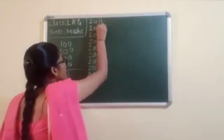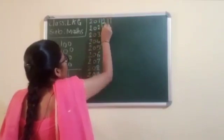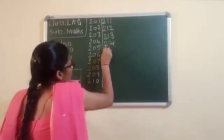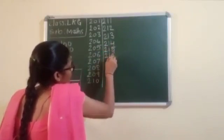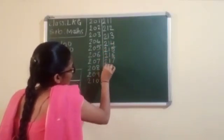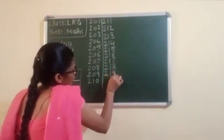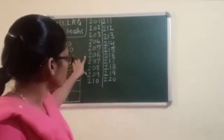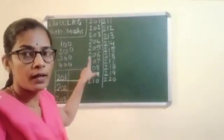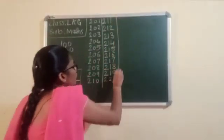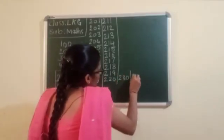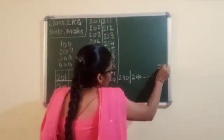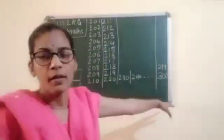Next one, children. 211, 212, 213, 214, 250, 260, 270, 280, 290, 220. When you write 2, that makes 200. When you write 3, it is 300. When you write 4, it is 400. Like this, children. Up to the last one: 240, 299, up to 300. Now you are going to practice.